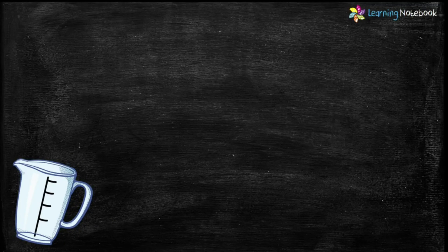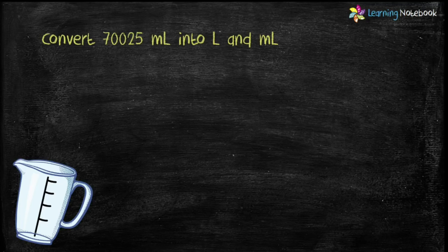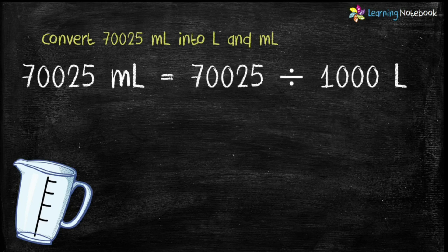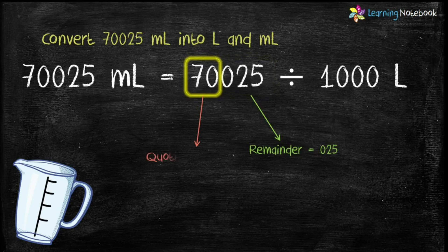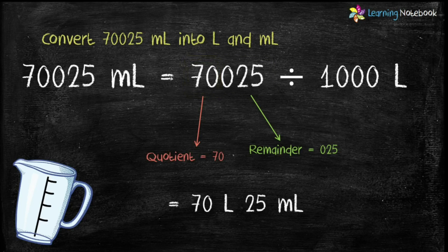Next question: convert 70,025 milliliter into liters and milliliters. Dividing by 1000, 025 (i.e., 25) becomes the remainder and 70 becomes the quotient. So the answer is 70 liters 25 milliliter.